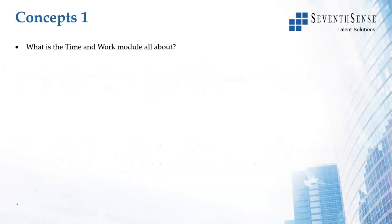So what is the time and work module all about? Here you will have a set of people working for different times, different number of days, different number of hours, and the number of people could change. The concept is: all of these happening results in work getting done, and we have to see when the work gets completed or when the work is up to a certain fraction. So time and work is about people working for a specific time and some work getting completed as a result.